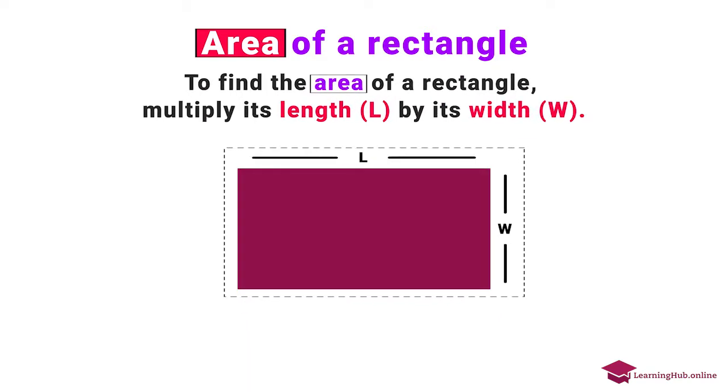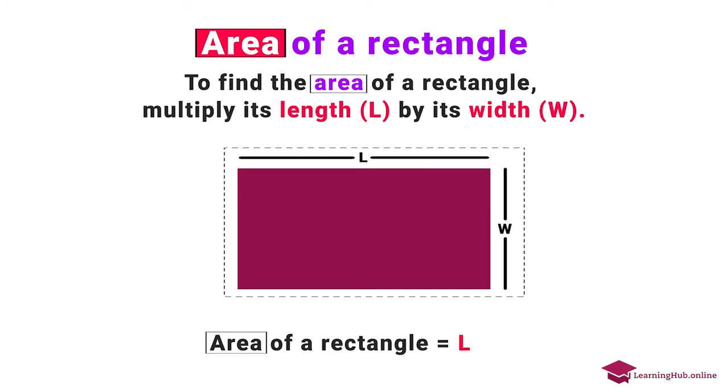Area of a rectangle. To find the area of a rectangle, multiply its length L by its width W. Area of a rectangle equals length times width.